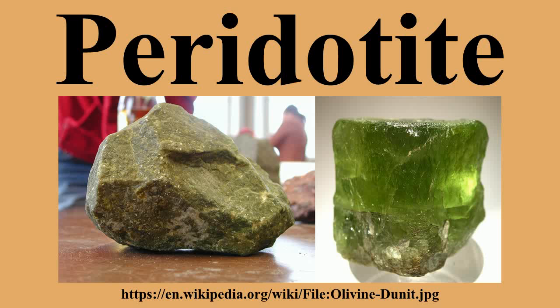With appreciable iron, peridotite is derived from the earth's mantle, either as solid blocks and fragments, or as crystals accumulated from magmas that formed in the mantle. The compositions of peridotites from layered igneous complexes vary widely, reflecting the relative proportions of pyroxenes, chromite, plagioclase, and amphibole.